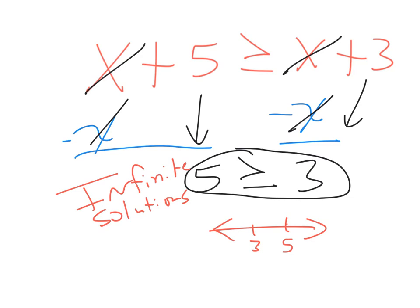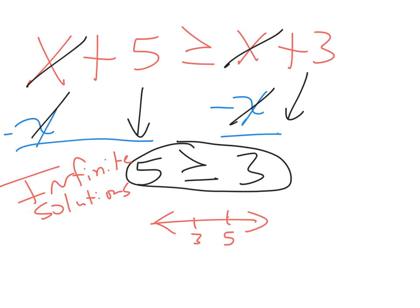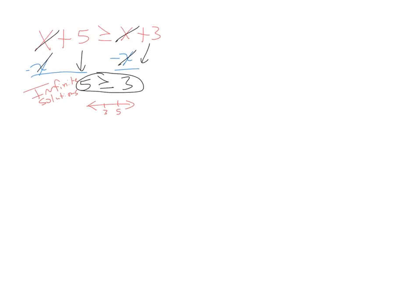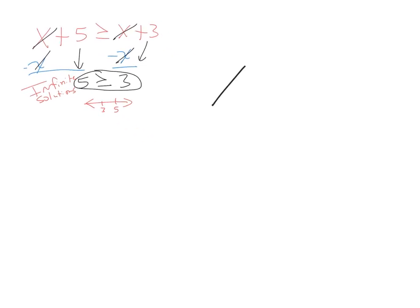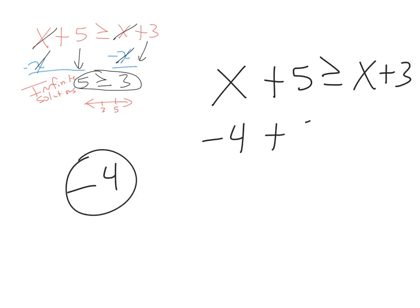Let's say, for instance, what if I take this right here? x plus 5 is greater than or equal to x plus 3. And since I said it was infinite solutions, let's just pick one random number. Let's take, for instance, negative 4. When x is negative 4, let's see if this still is true.